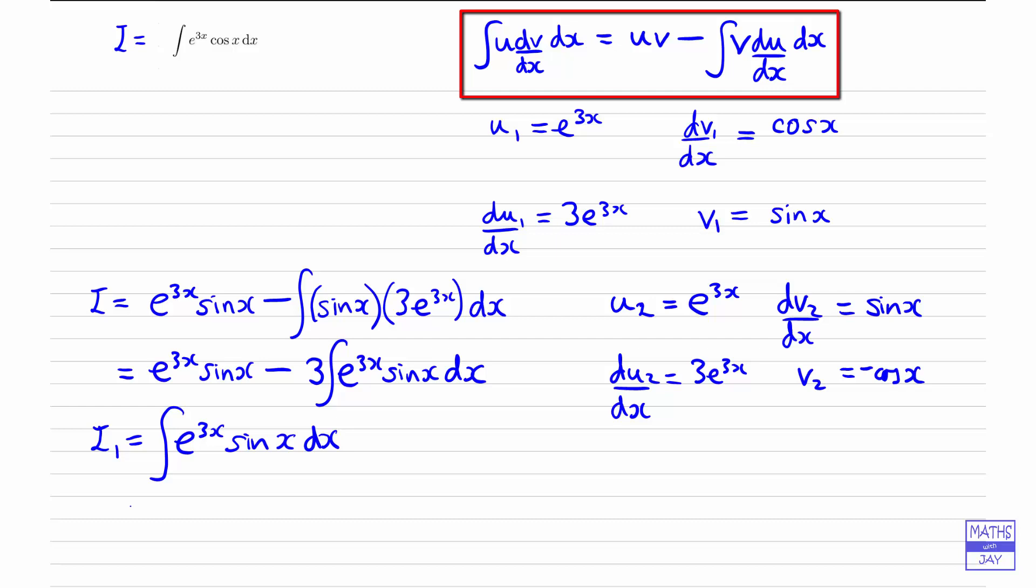So now, using the formula, our integral i1 is going to be the product of u2 and v2, first of all. Let's take the minus out at the front. So it's e to the 3x times minus cosx. So let's write that as minus e to the 3x cosx.